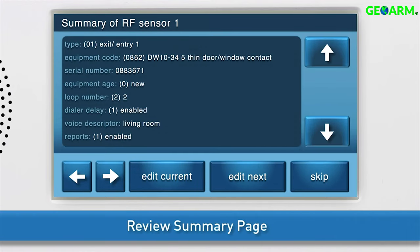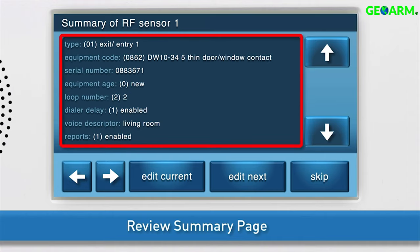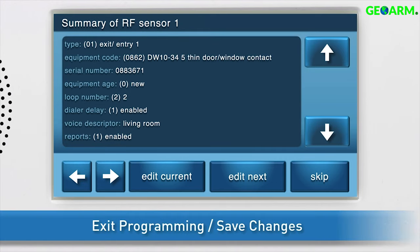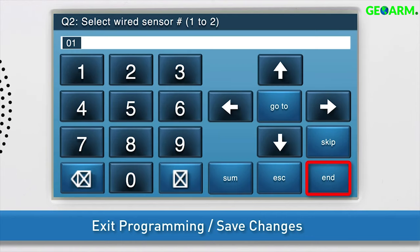Review the summary page to ensure all information is correct. Review all answers. If you need to edit any of the information, press Edit Current. To exit programming mode and save your changes, press Skip. Then press End.